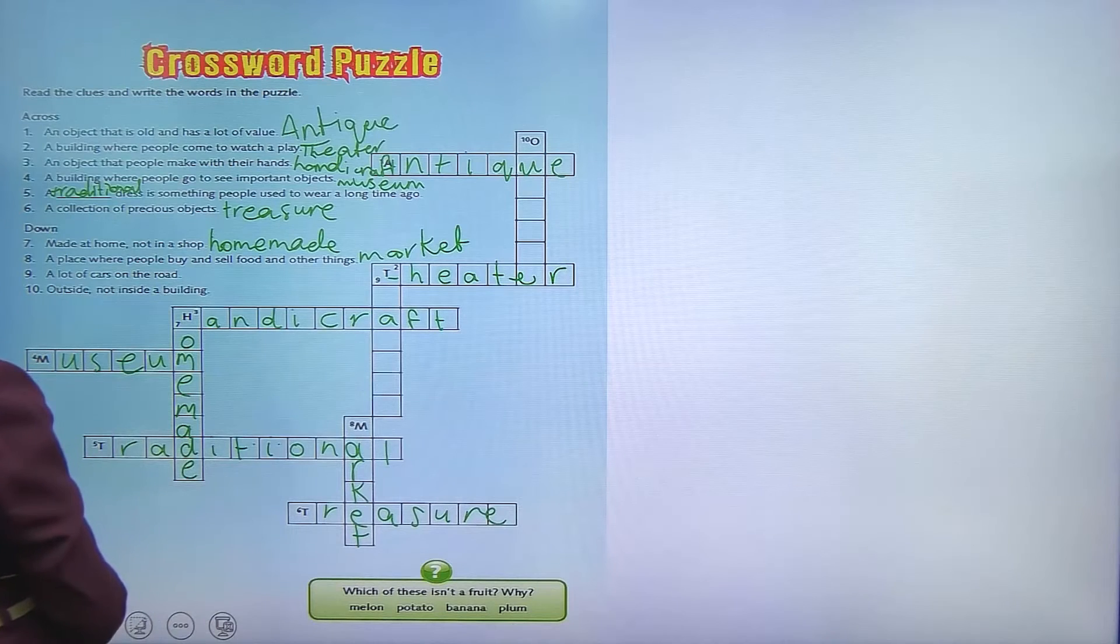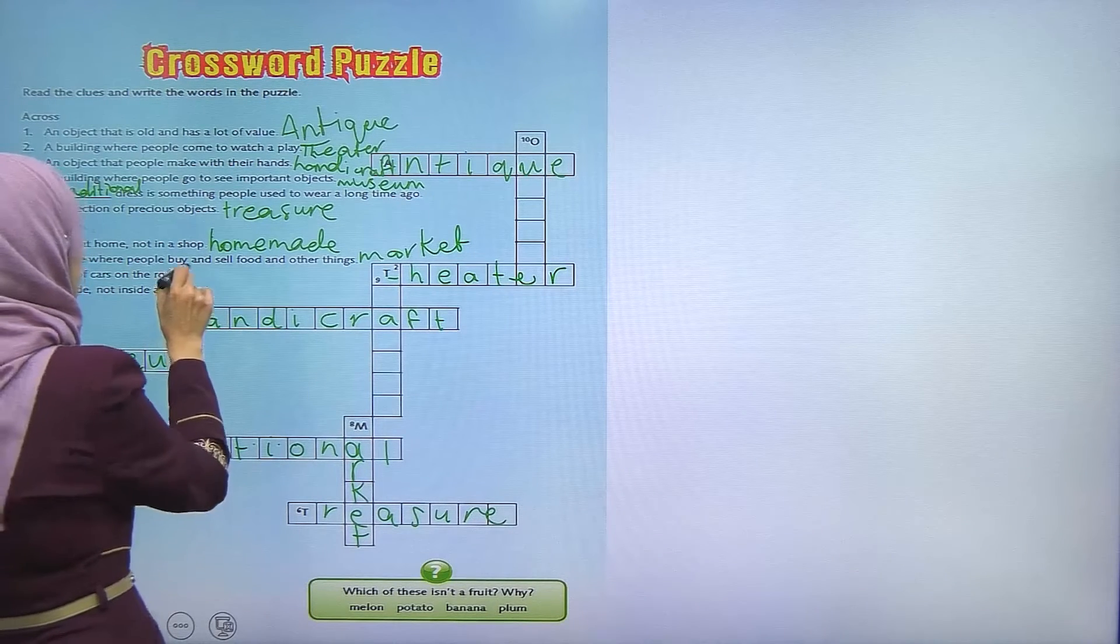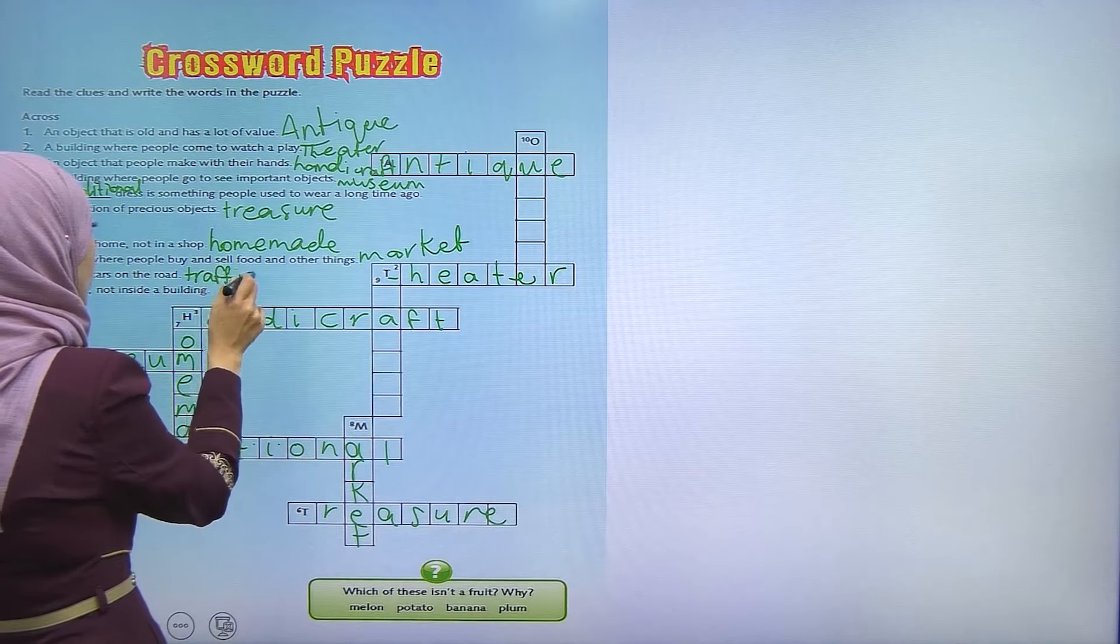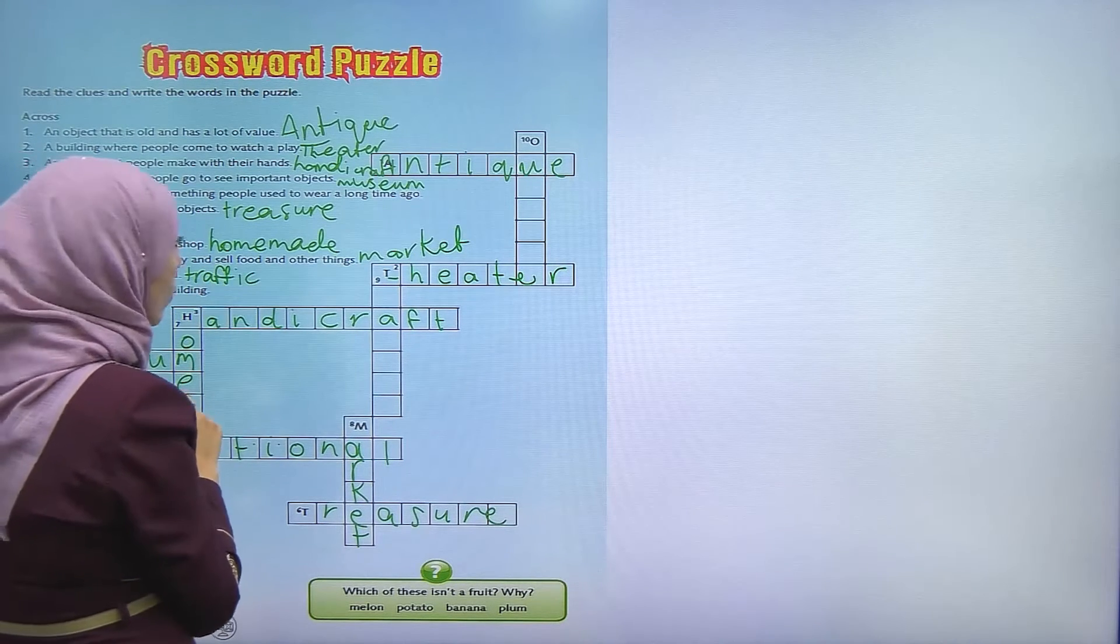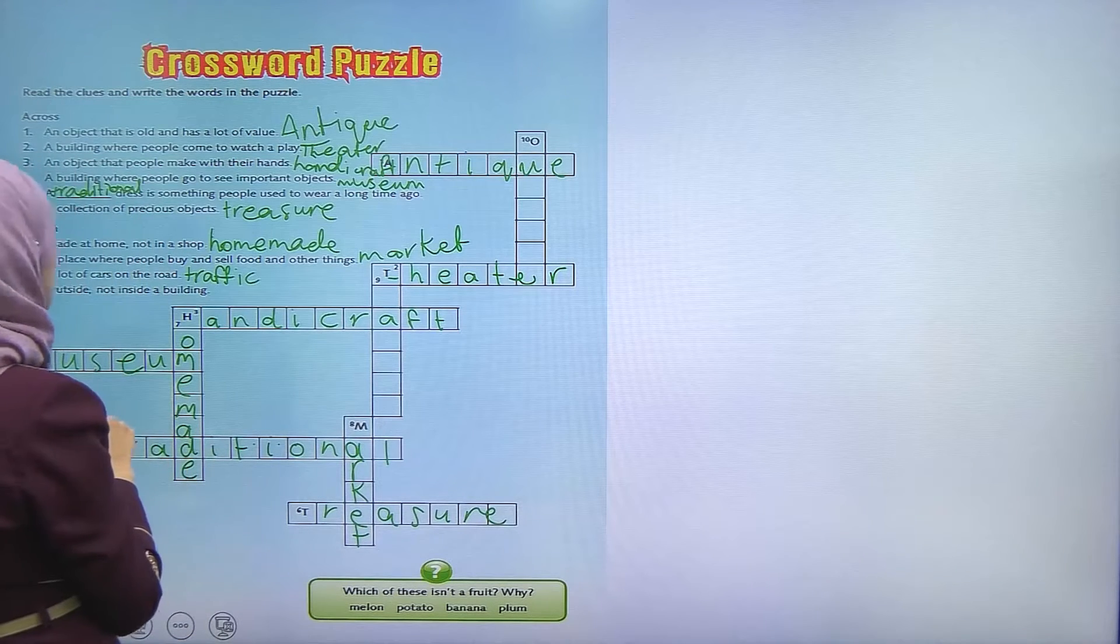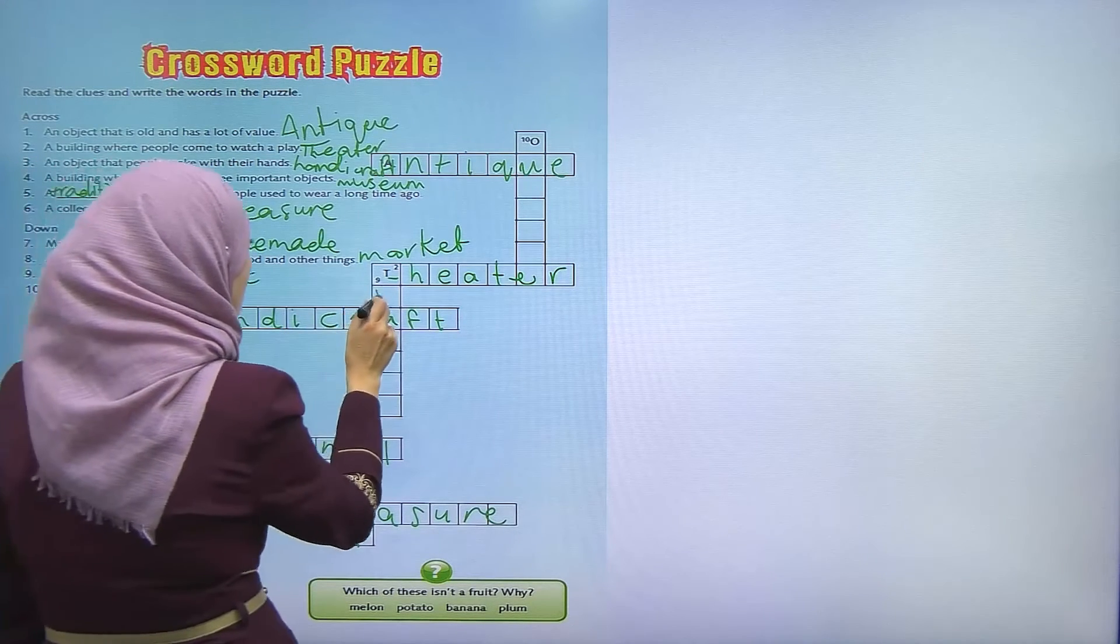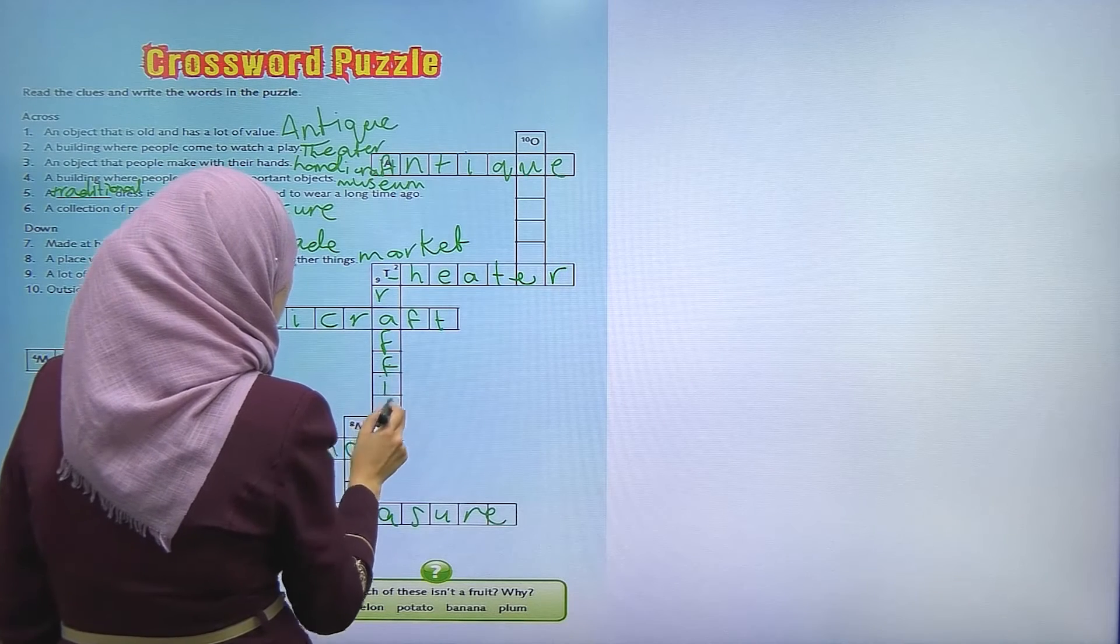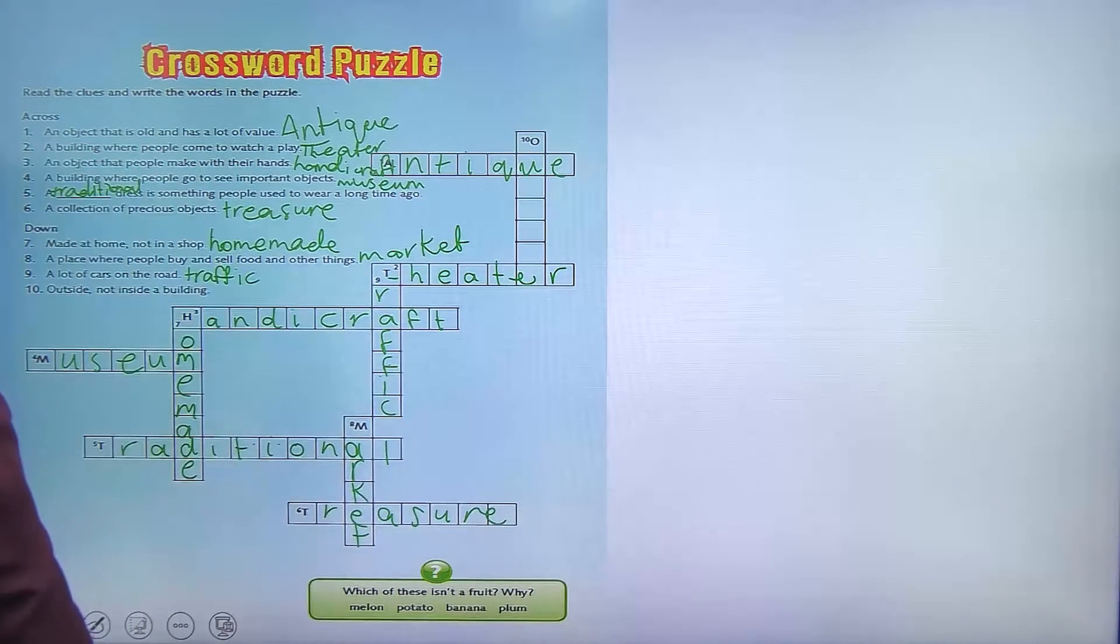And let's go for this. A lot of cars on the road, so it is traffic. Traffic, traffic, traffic. Okay, where is it? It's number nine. T-R-A-F-F-I-C, traffic.